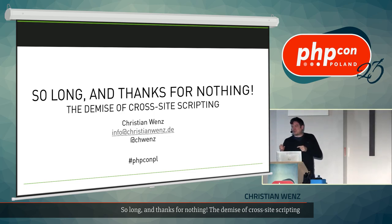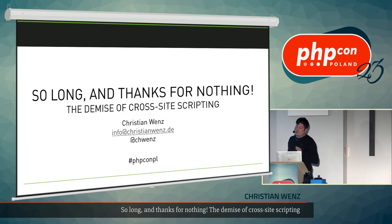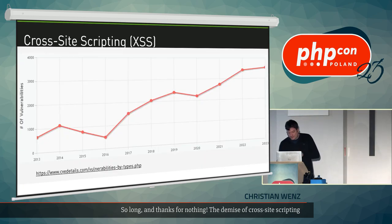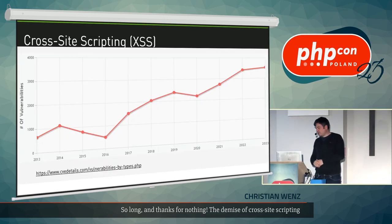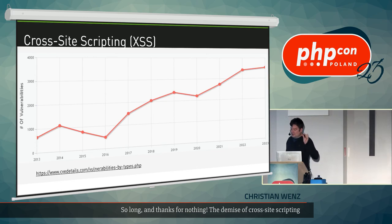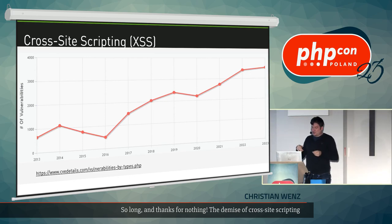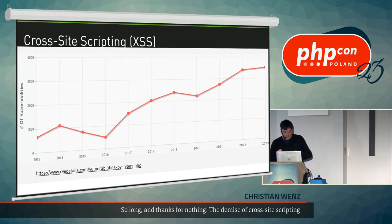Let's talk about how cross-site scripting works. I need to set the context, because that also contributes to the countermeasures we are about to discuss. But first, about my claim with those numbers. Here's a chart from cvedetails.com. CVE is Common Vulnerabilities and Exposures — for every security risk, there is a number assigned, and each year it's counted how often which vulnerability was found. This is the chart for cross-site scripting.